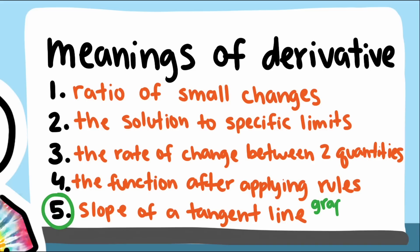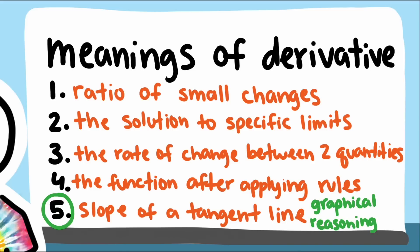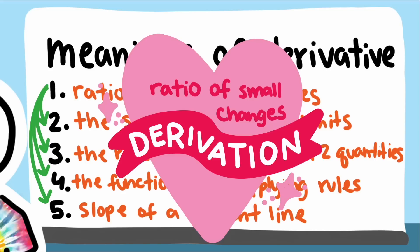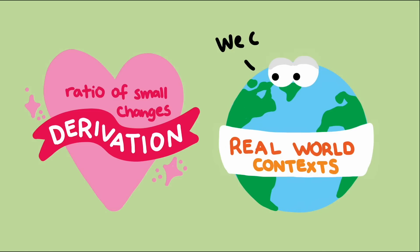Thinking about derivatives as slopes of a tangent line can help in reasoning about derivatives in graphical contexts, or to justify techniques, like why setting the derivative equal to zero can help to find maximum or minimum values. But it is the reasoning about the ratio of small changes that is used to develop the thinking of all the others. That makes it the heart of derivation. It is also the conception that is usually most helpful in interpreting the meaning of a derivative in a real-world context.